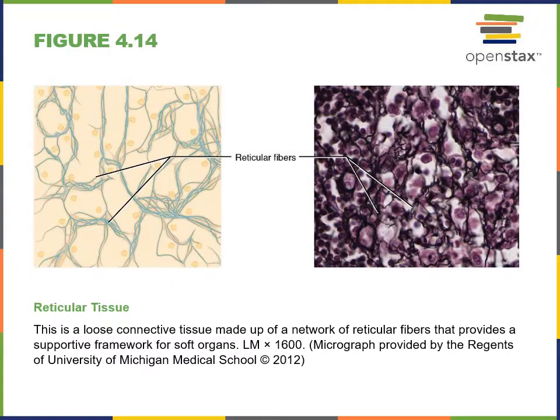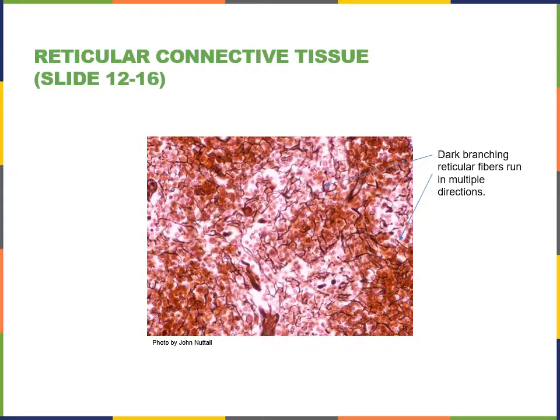Reticular connective tissue forms the soft, supportive skeleton of organs like the liver, bone marrow, lymph nodes, and spleen. The distinguishing characteristic of reticular connective tissue is a large number of reticular fibers. These branching reticular fibers run in multiple directions.